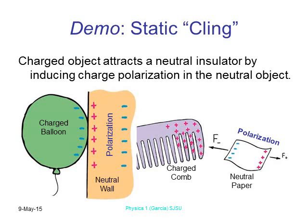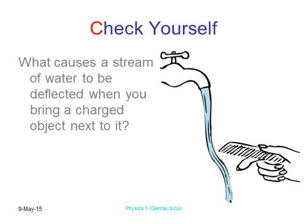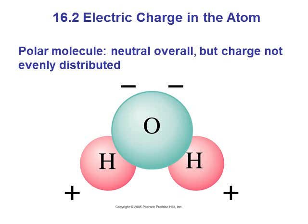Here's a fun experiment: find a fur coat — fur works better than anything else — turn the water faucet on to a steady stream, not too fast. Rub a comb all over the fur coat, then hold it close to the water stream and you can actually bend the water. Why? Because water is a polar molecule — it's neutral overall but polarized — so the comb attracts the hydrogen side of the water molecules.